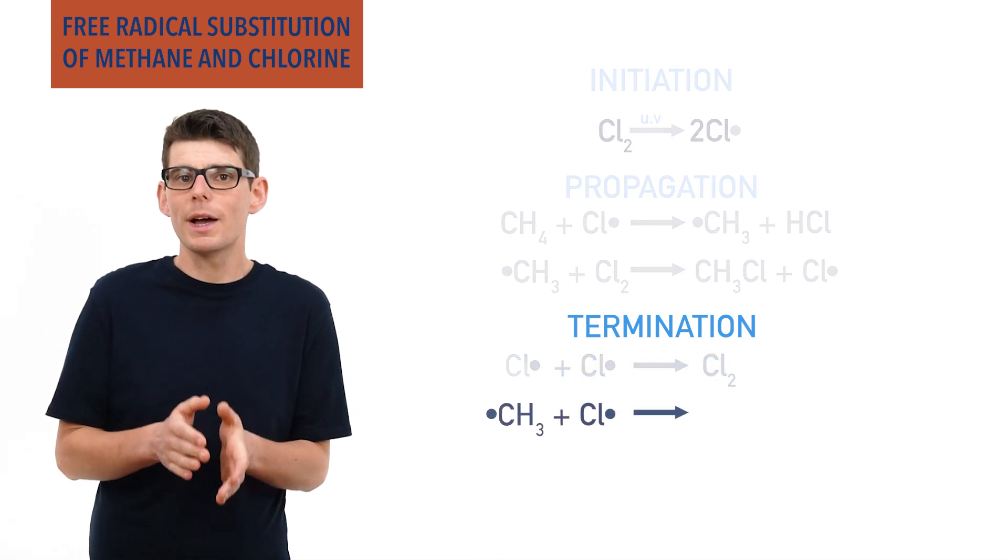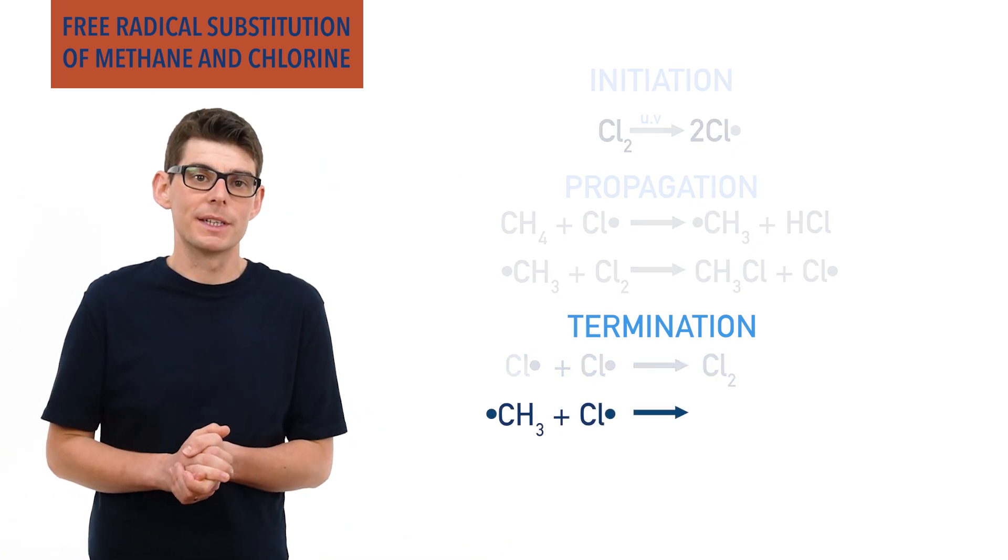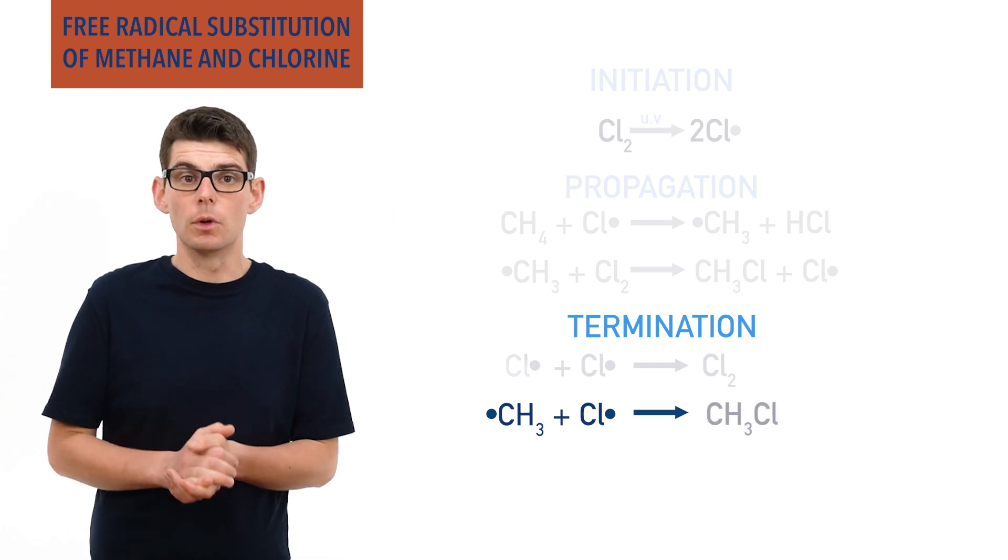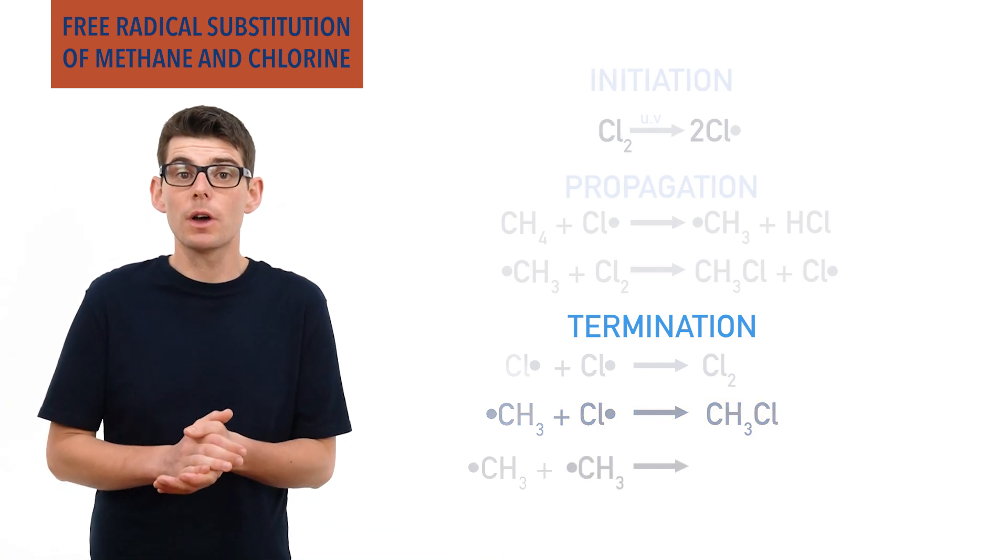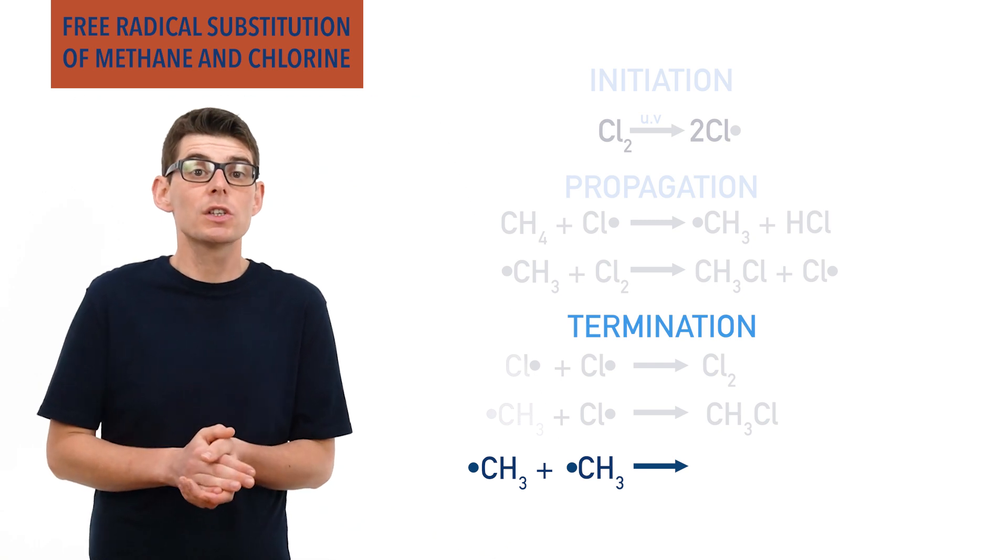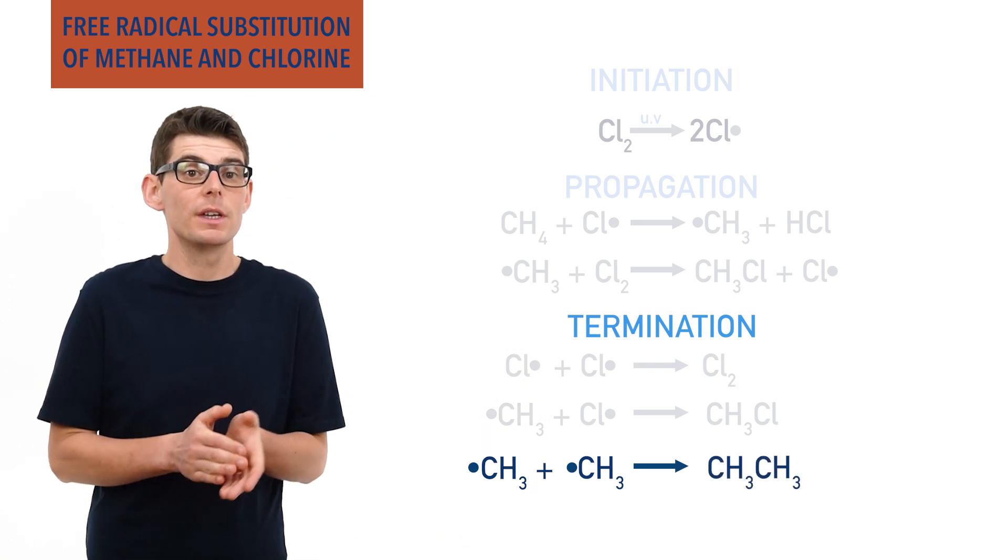A chlorine radical and a methyl radical can combine together to form a chloromethane molecule, CH3Cl. And finally, two methyl radicals can combine together to form ethane, CH3CH3.